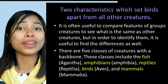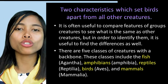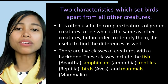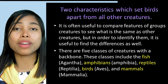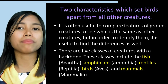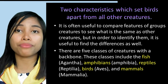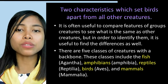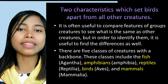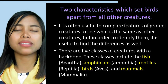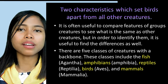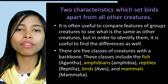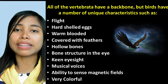To identify birds, it is useful to compare features and find differences from other creatures. There are five classes of creatures with a backbone: fish (Agnatha), amphibians (Amphibia), reptiles (Reptilia), birds (Aves), and mammals (Mammalia). These are the characteristics which set birds apart from all other creatures — all vertebrates have a backbone, but birds have unique characteristics.